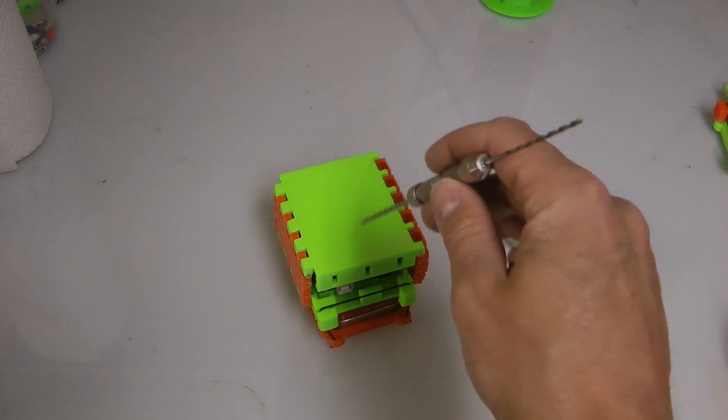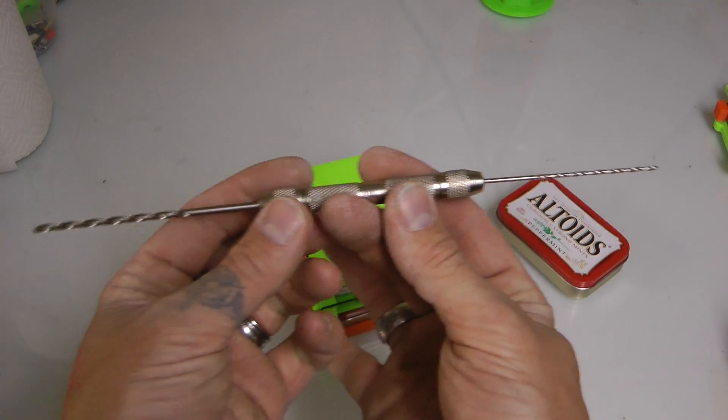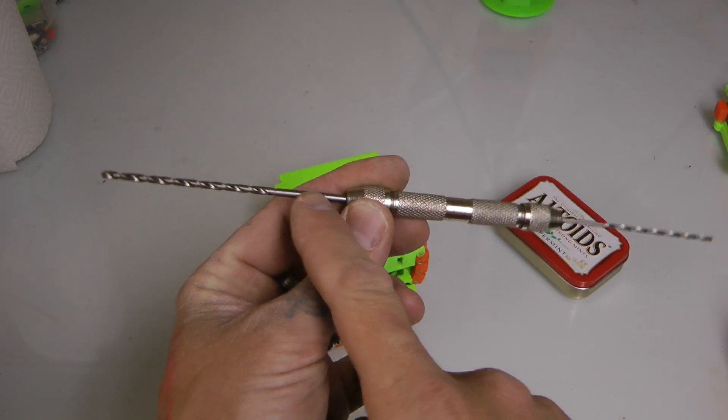Little hint. If you're going to make some of these or make a lot of these, you need one of these. This is a double-sided pin vise with taper-sized bits.